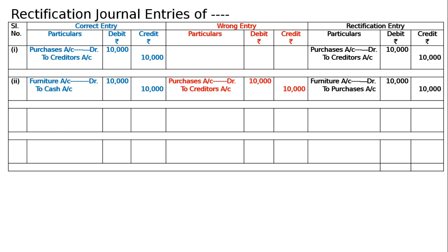The rectification entry: purchases account debited to cash account was the wrong entry. Now furniture will come — furniture account debit, purchases will go. For rectification, credit purchases account to cancel the wrong debit. The entry becomes: furniture account debited to purchases account credited — debit/credit cancelled — now you are getting furniture to cash.